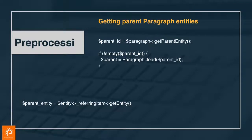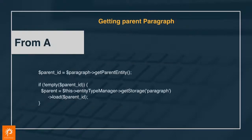This is an example from a global function like a preprocessor - you see we're calling the global paragraph load method. This is the exact same example from a class where we have injected the entity type manager and we're loading the paragraph.